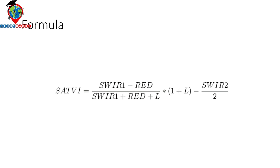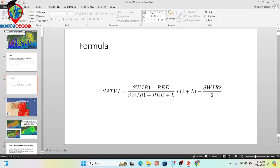Basically we can use Landsat, Sentinel, or MODIS — any satellite imagery we can easily use. In this case I will use Sentinel-2 satellite imagery, and I will try to perform this mapping. So let me open my code.